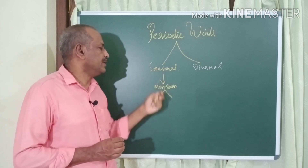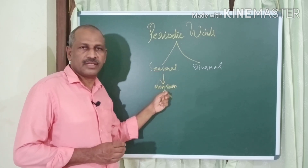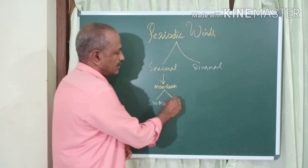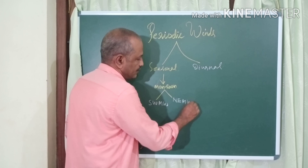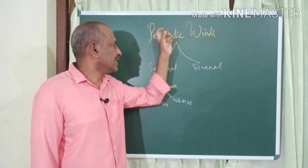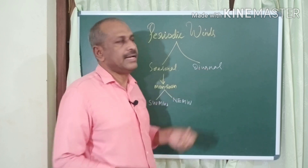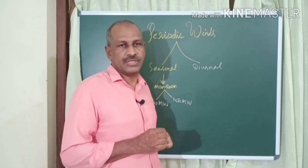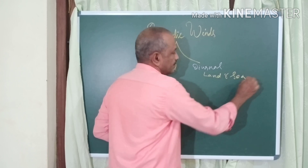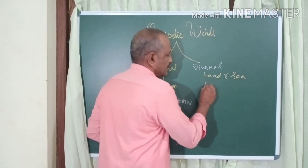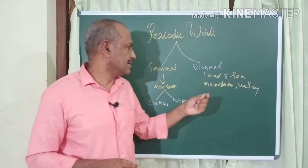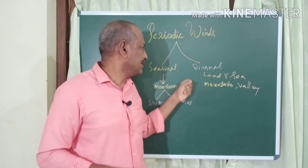An example of a seasonal wind is monsoon winds, and monsoon winds can be classified into two: southwest monsoon winds and northeast monsoon winds. These are examples of periodic winds of the seasonal category. For diurnal periodic winds — when day changes to night the direction changes — examples are land breeze and sea breeze, and mountain breeze and valley breeze.